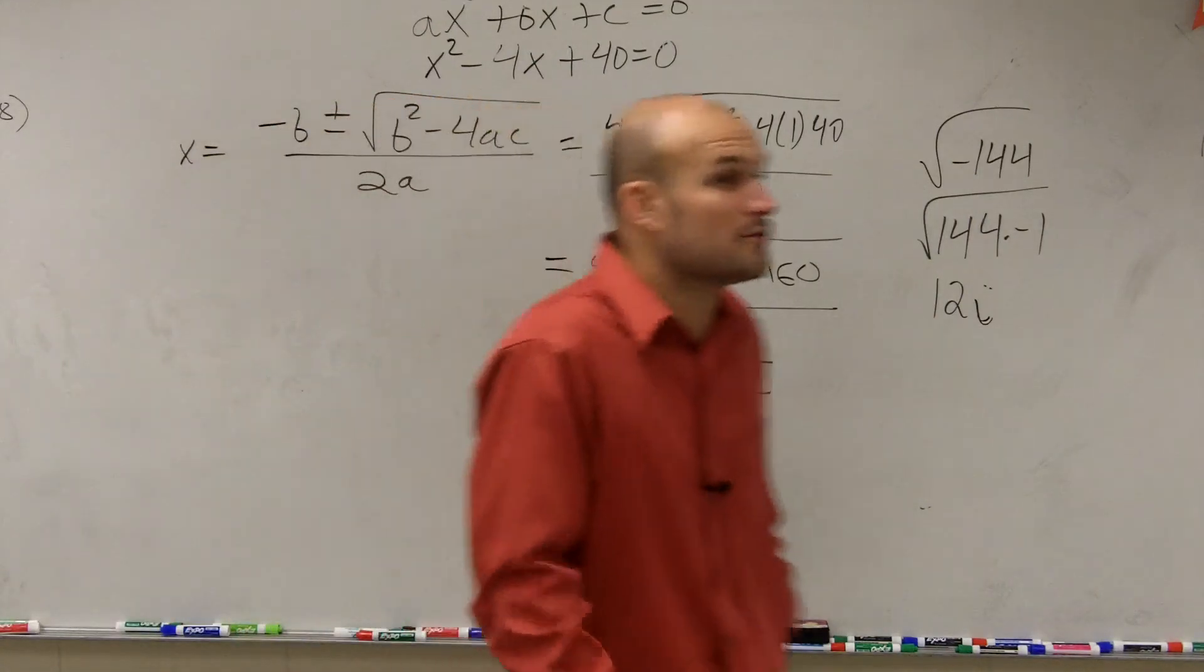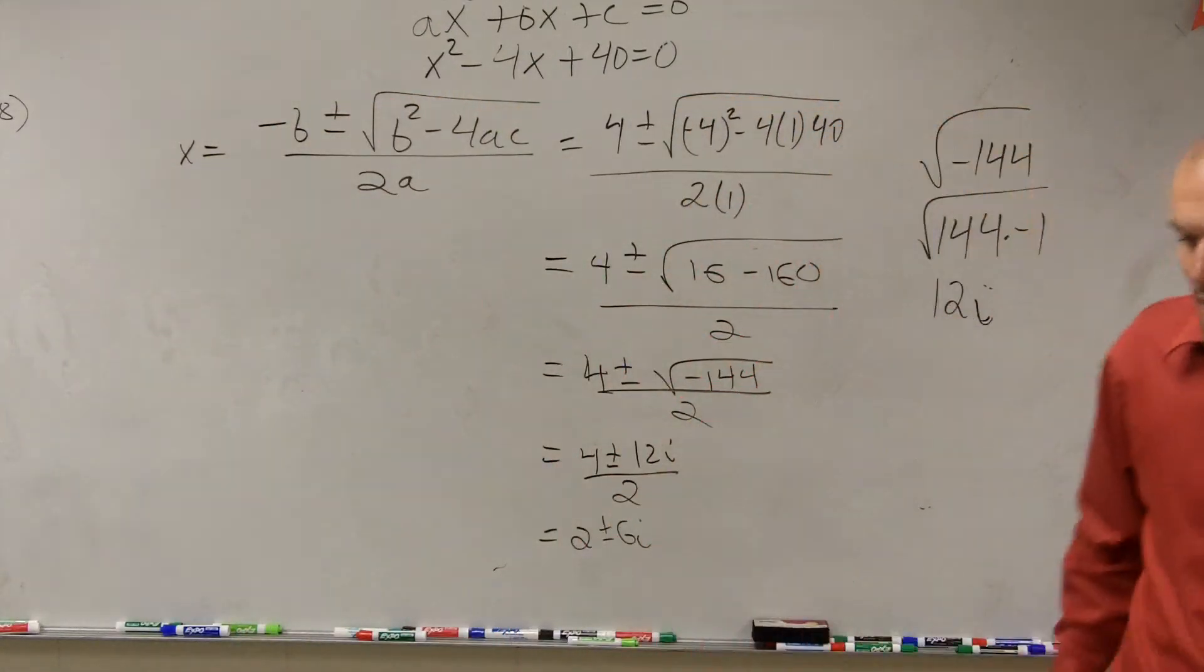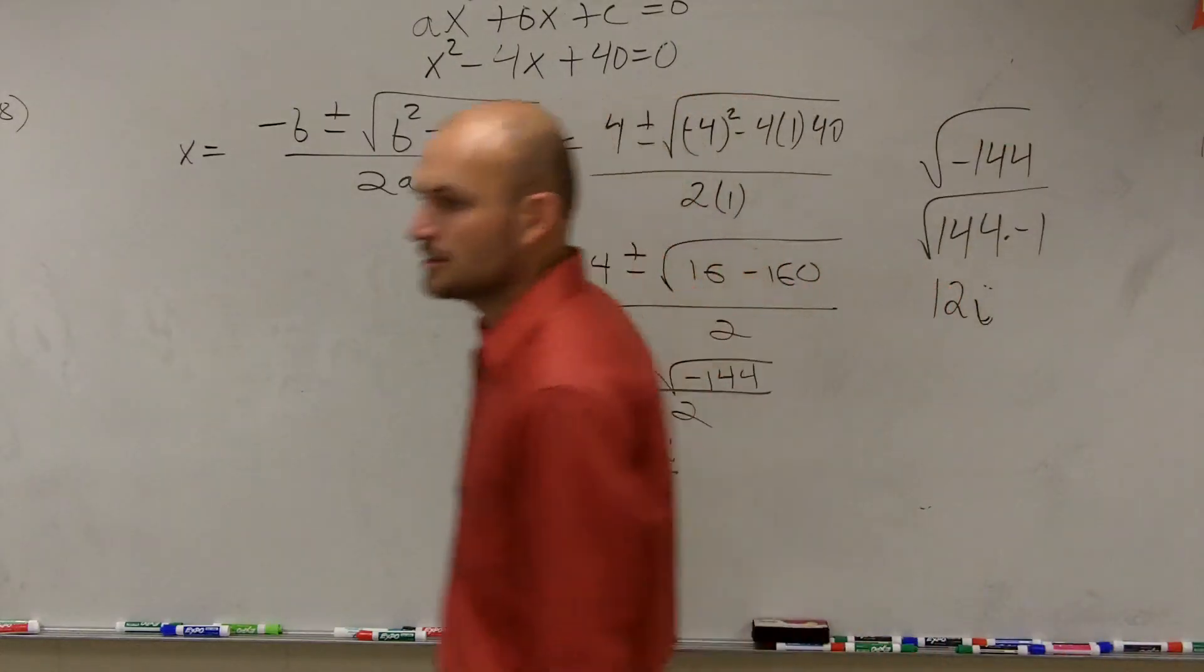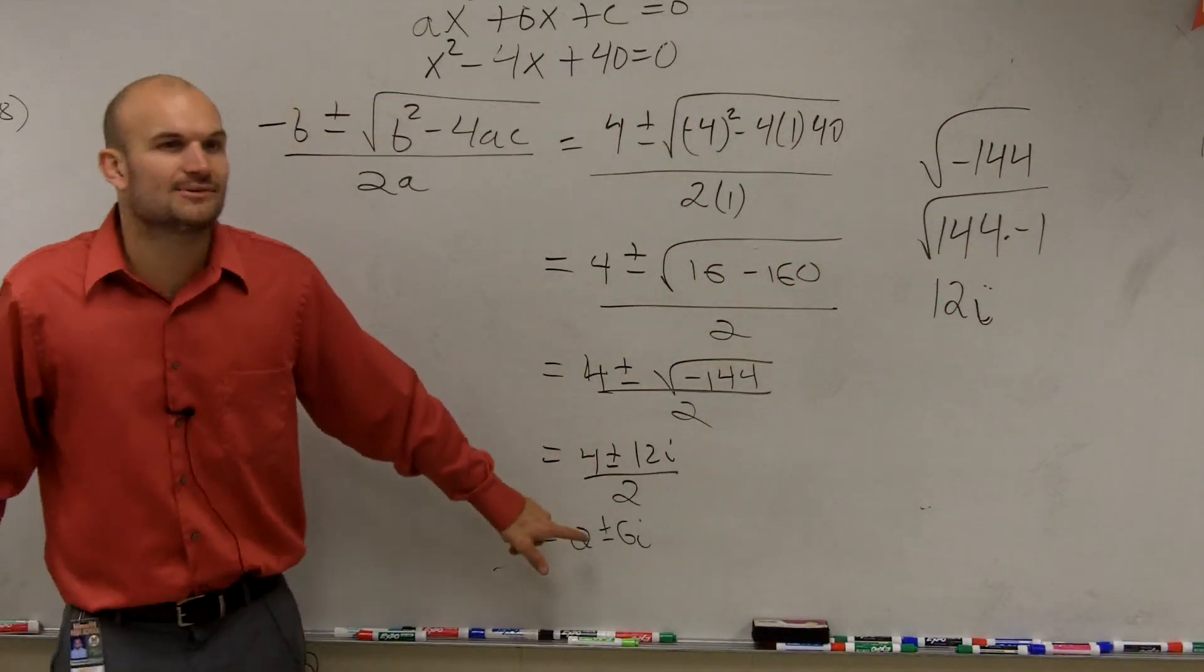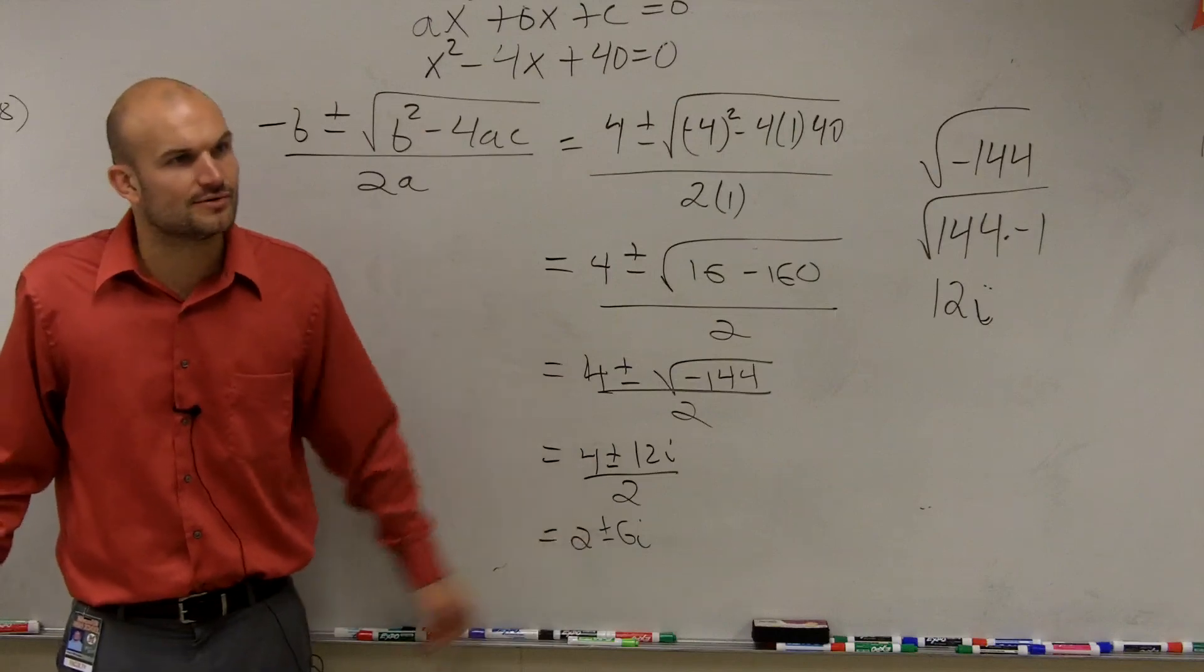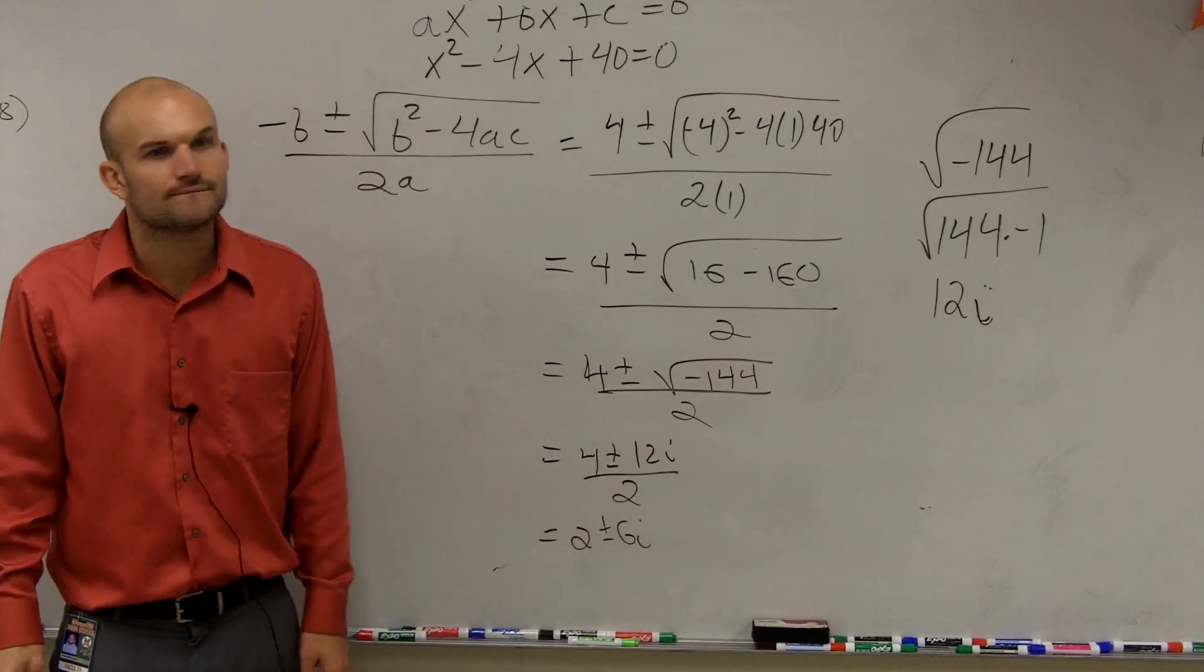So now, the question is, so now we found the roots by using the quadratic formula. Now, we need to answer the question, what are the type of roots? Well, we know we deal with i, so we have two complex roots. OK? Cool?